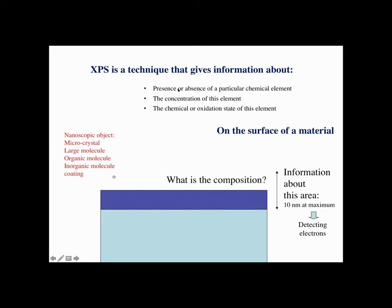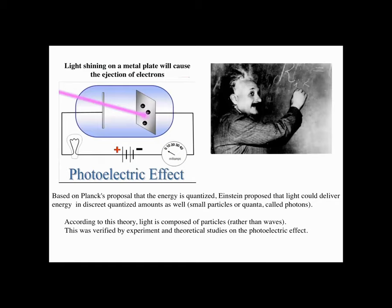As a summary: XPS gives information about the presence or absence of a particular chemical element, the concentration of that element, and its chemical or oxidation state — all from the surface. The information comes from the last layers of a material, maximum about 10 nanometers. As I mentioned, it is based on the photoelectric effect, proposed by Einstein: a quantum process in which electrons absorb energy from a photon and are able to travel into vacuum.